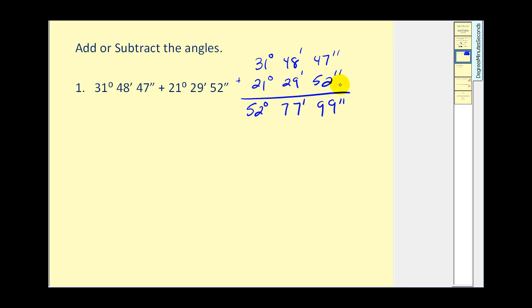But we already said that 60 seconds equals 1 minute, and 60 minutes equals 1 degree. So we cannot leave it in this form. Let's take a look at the seconds first. We could rewrite this as 60 seconds plus 39 seconds.